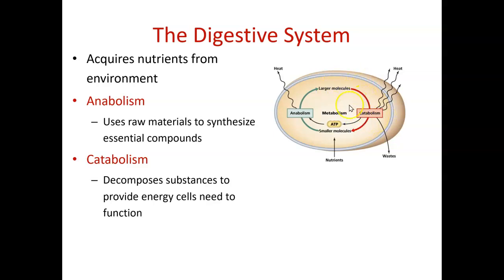Catabolic is taking a large molecule and breaking it down into smaller components. When we take in starch, protein, or lipids, our digestive system's job is to break them down into small molecules so they can be absorbed into our blood and travel to all cells of the body. The cells will use those molecules to generate ATP or build larger molecules the cell might need. These two processes are happening constantly in the body.